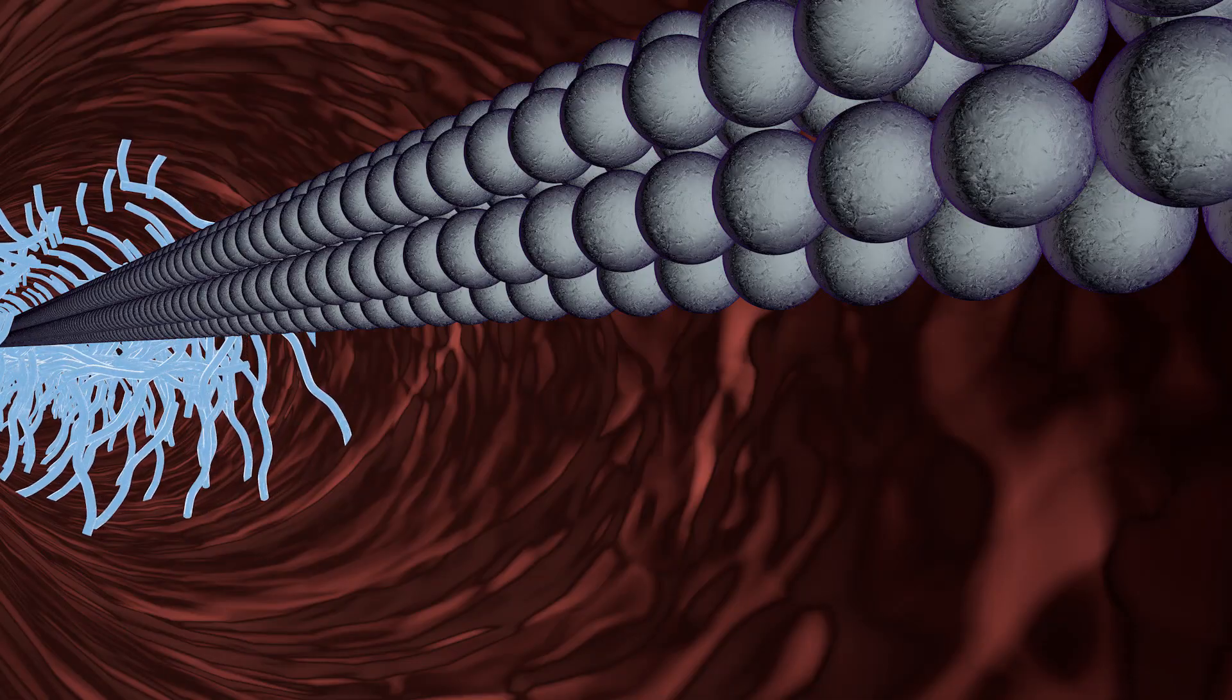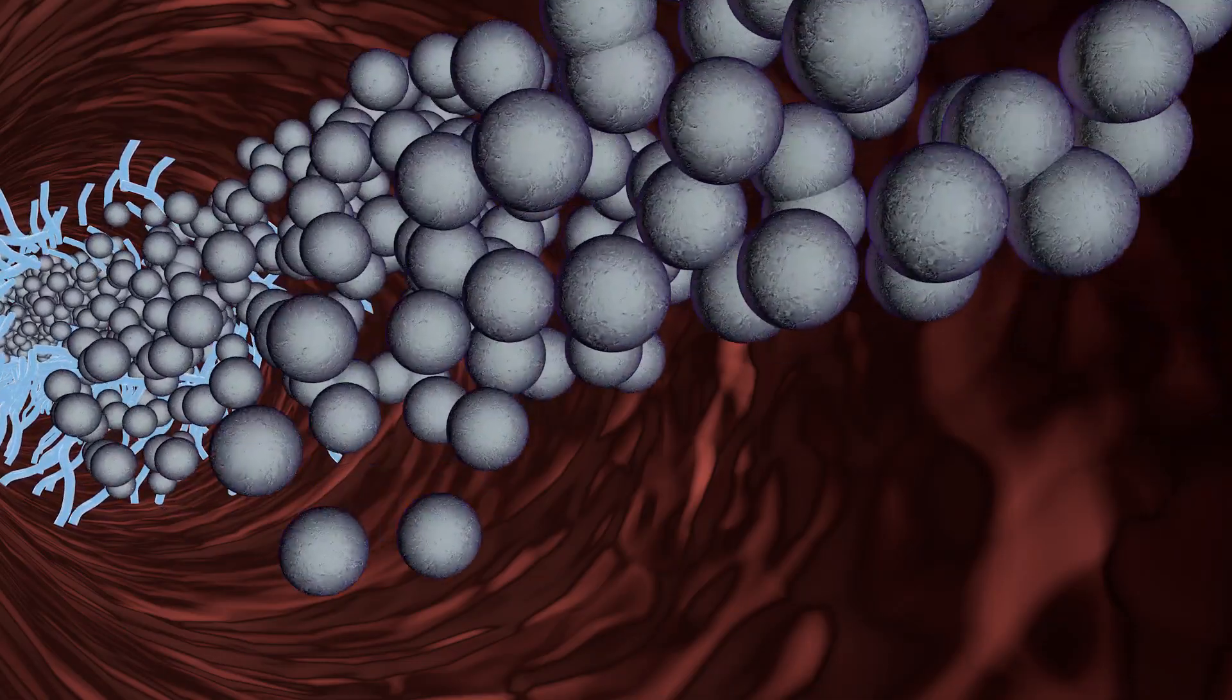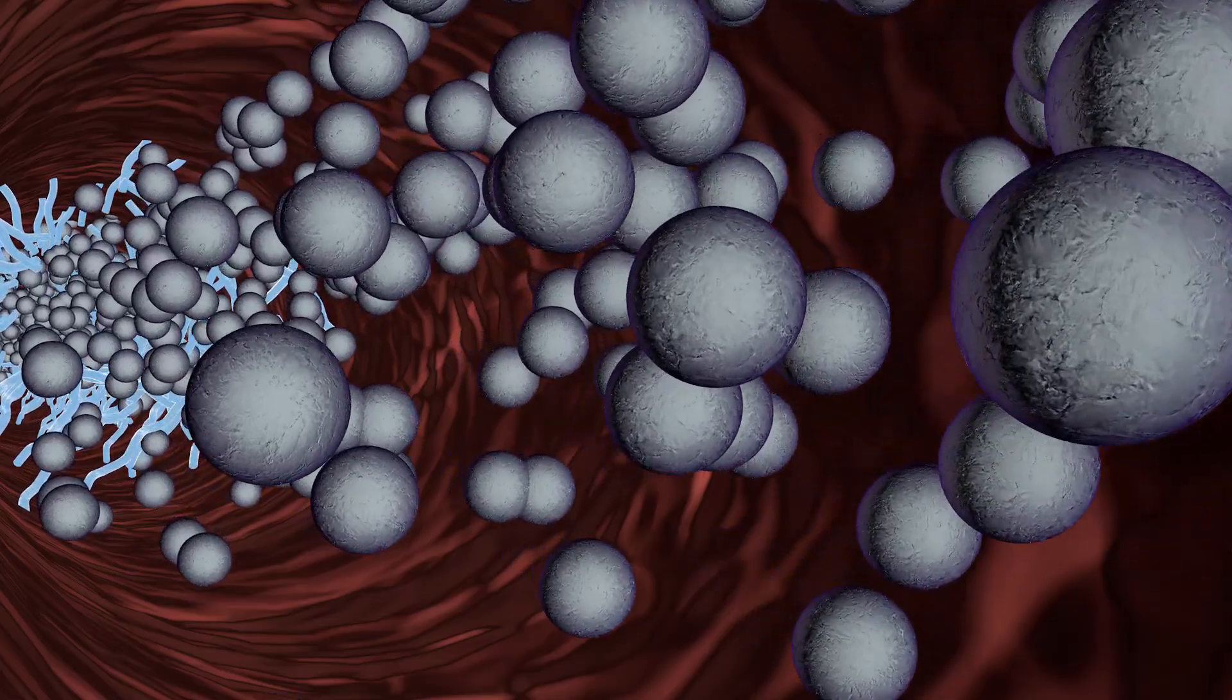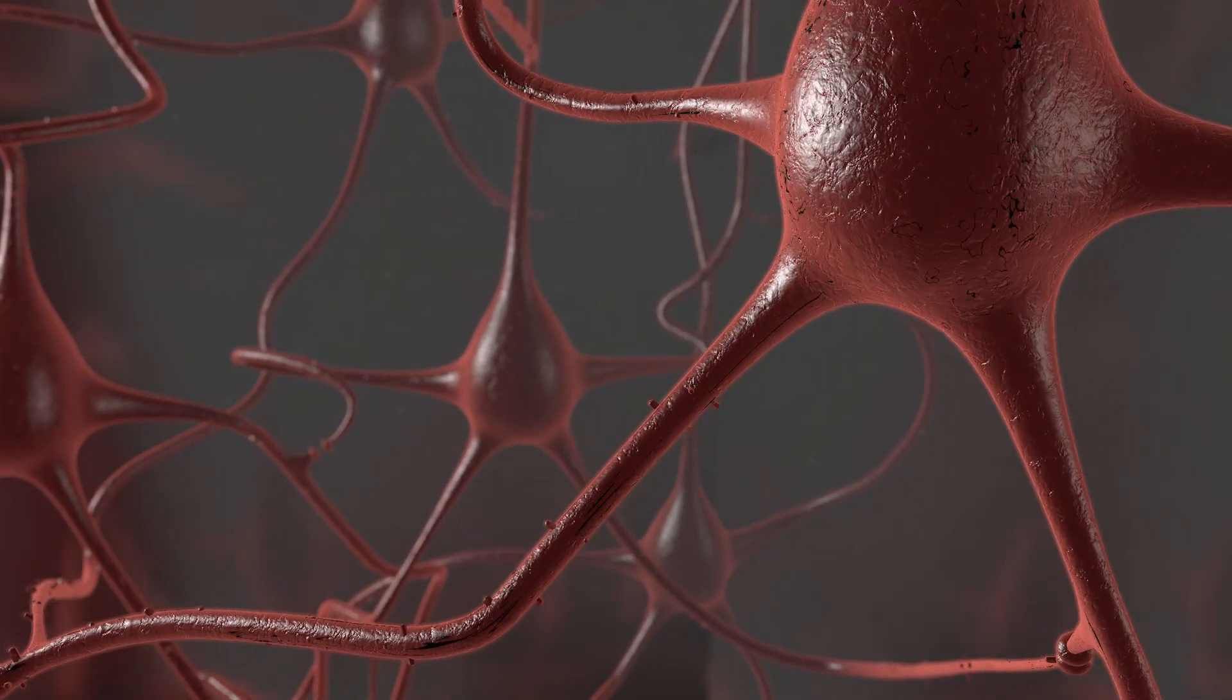Because of the tau tangles, the neuron's delivery system fails, and the neuron can't get the energy and nutrients it needs. Without nutrients, the cell dies.